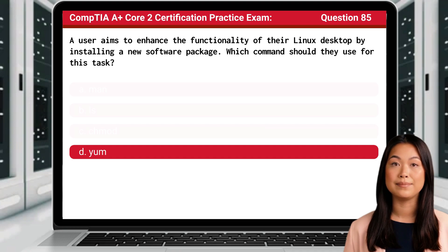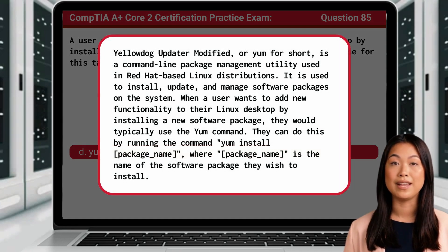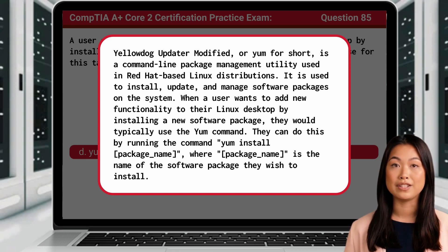The answer is D: Yum. Yellowdog Updater Modified, or Yum for short, is a command-line package management utility used in Red Hat-based Linux distributions. It is used to install, update, and manage software packages on the system. When a user wants to add new functionality to their Linux desktop by installing a new software package, they would typically use the Yum command by running: yum install package-name, where package-name is the name of the software package they wish to install.